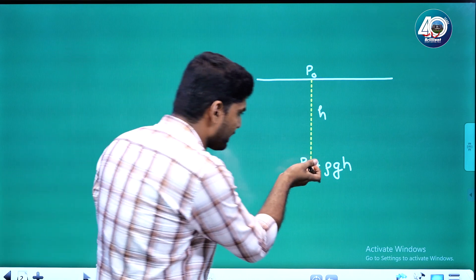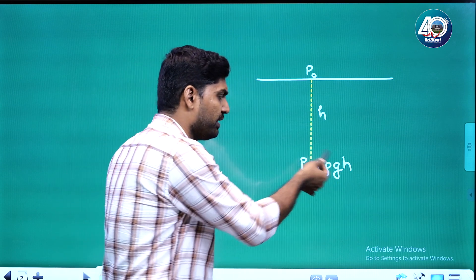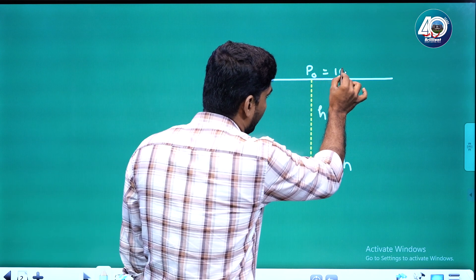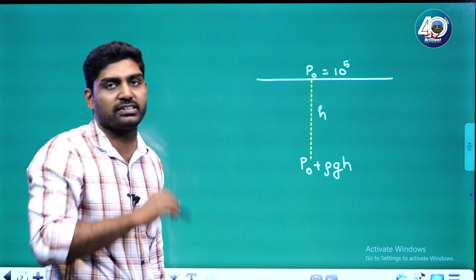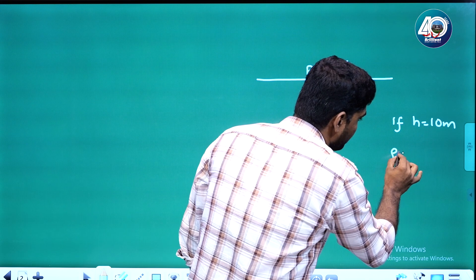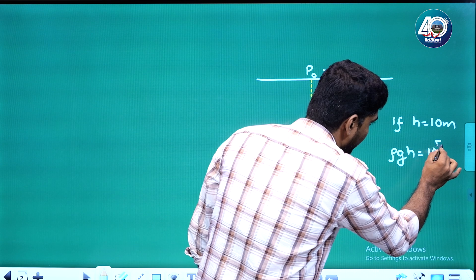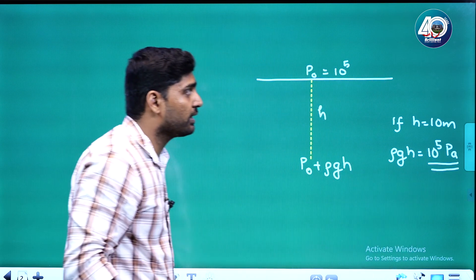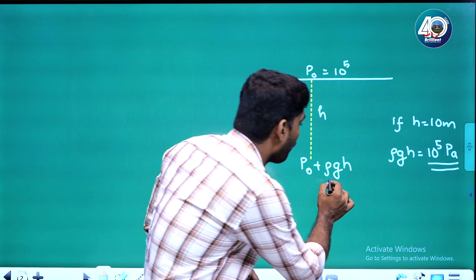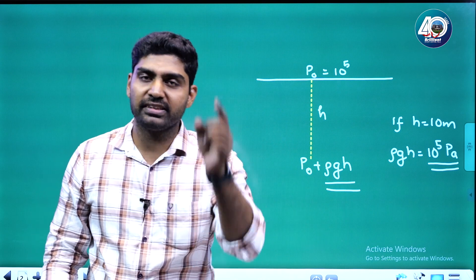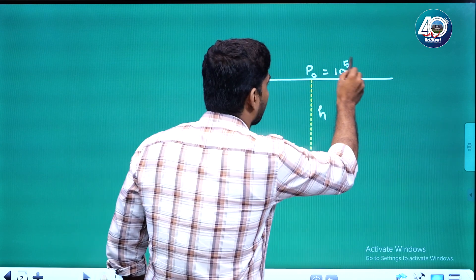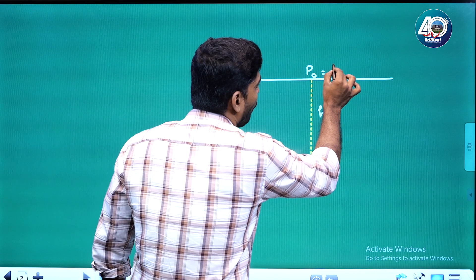Here, ρ is the density, g is acceleration due to gravity, and H is the depth. For example, P0 is 10^5 Pascal. If H is 10 meters depth, the pressure increases by 10^5, so the total becomes 2 × 10^5. Atmospheric pressure plus 10 meters of water depth doubles the pressure.